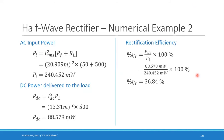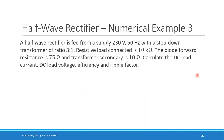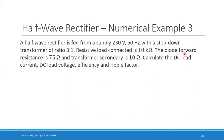The third problem: a half wave rectifier is fed from a 230 V, 50 Hz supply through a 3:1 step-down transformer. RL = 10 kΩ, RF = 75 Ω. A new parameter is given: transformer secondary resistance RS = 10 Ω. Calculate IDC, VDC, efficiency, and ripple factor.